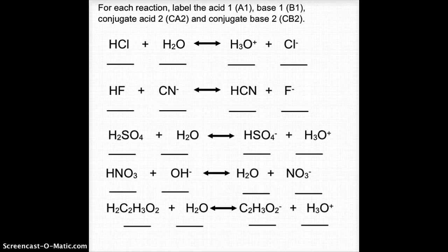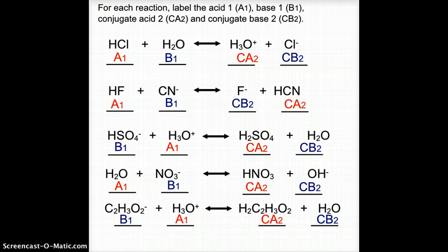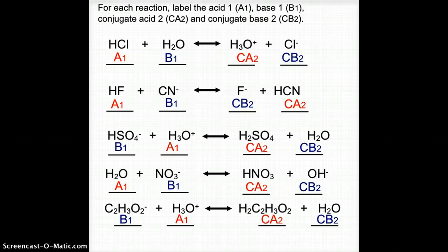Let's see how you did. In each case, identify the acid as the substance giving up a hydrogen ion and the base as the substance receiving the hydrogen ion. The conjugate acid will be the base with an increased hydrogen count, and the conjugate base will be the ion or molecule left behind with one less hydrogen from the acid. Check your work and make sure everything matches up. I hope this was helpful in understanding conjugate acid-base pairings both in a standard equation and in a balanced chemical equation.